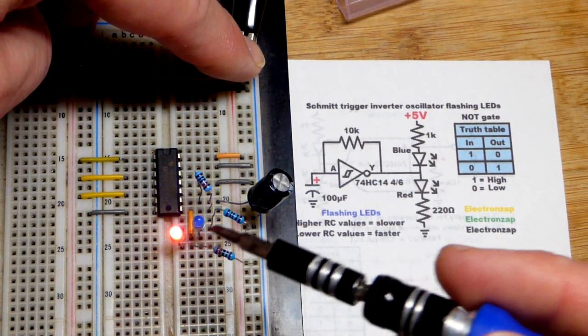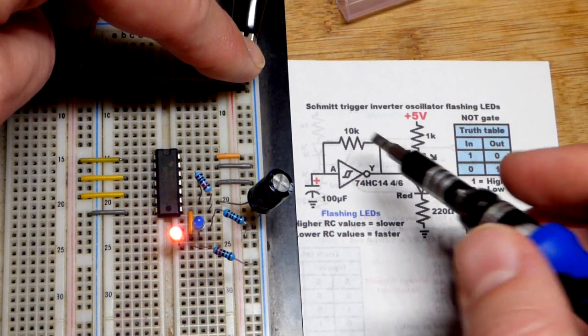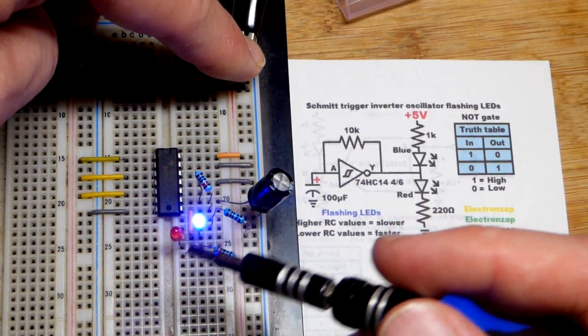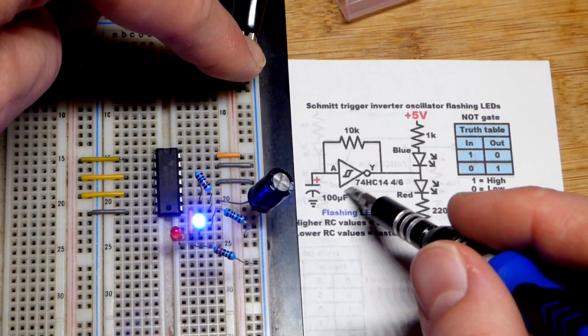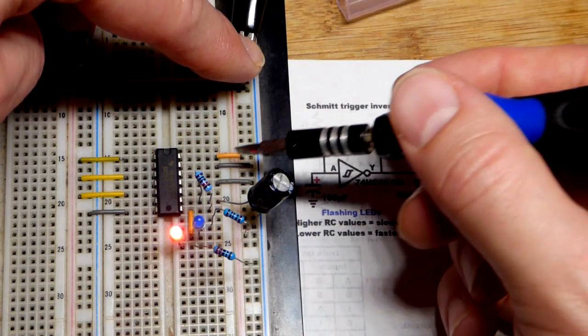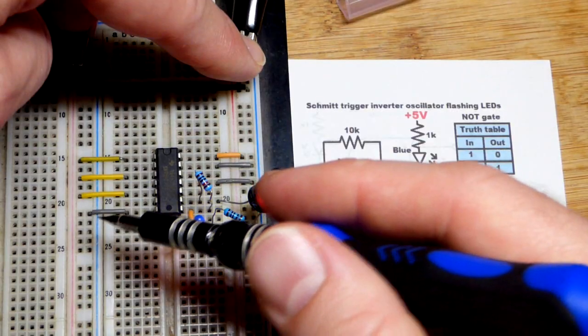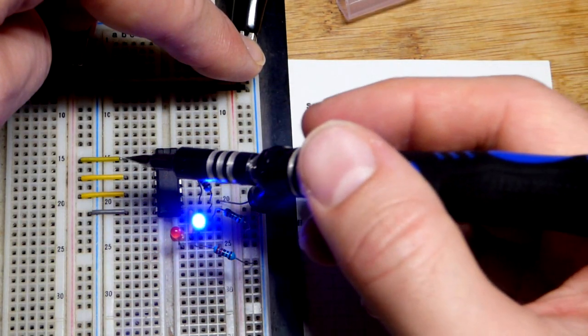It's an astable multivibrator, but we wired it to flash LEDs. It's pretty simple. First off, you've got power of the integrated circuit, positive supply up there, negative supply up there. We're using 5 volts, which is good for this.